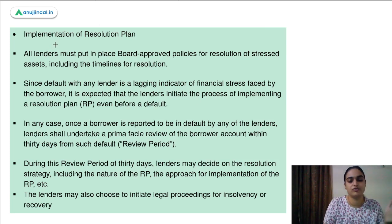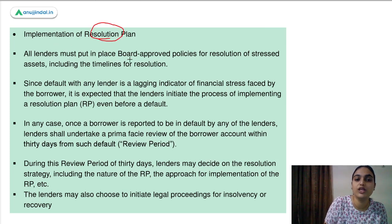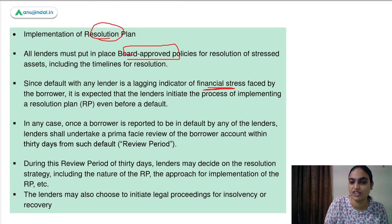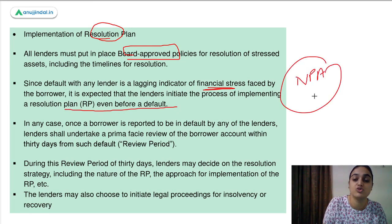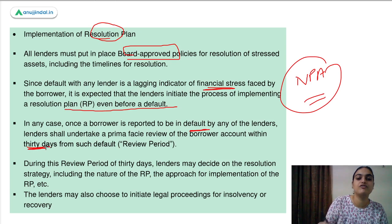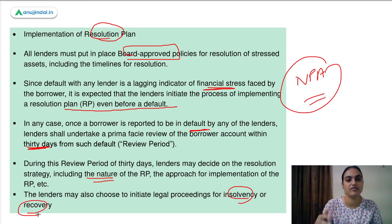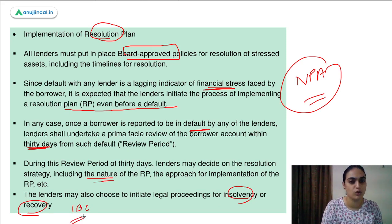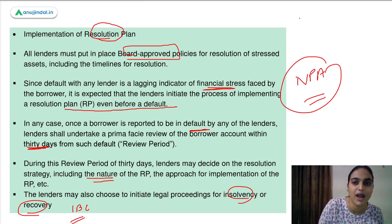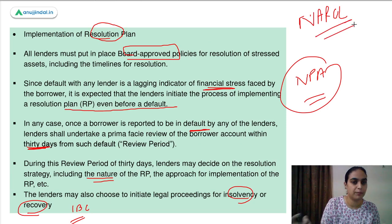After early identification, you need to implement the resolution plan and have a board-approved policy for resolution. Since a default with a lender is a lagging indicator of financial stress, lenders are expected to initiate the resolution plan even before the default occurs. Once a borrower is reported to be in default, take 30 days to review that borrower — see what strategy you can use to recover the amount and then implement it. If nothing is possible, finally go for insolvency or recovery through liquidation, referring the case to the Insolvency and Bankruptcy Code. We are also setting up a bad bank — the NARCL — which will further help in recovery.